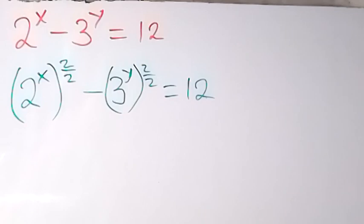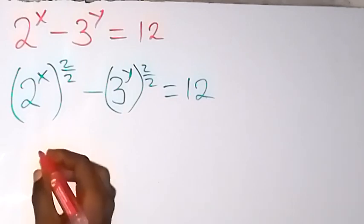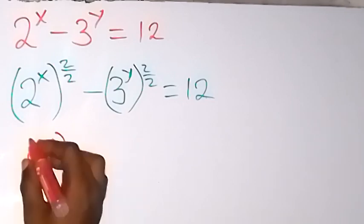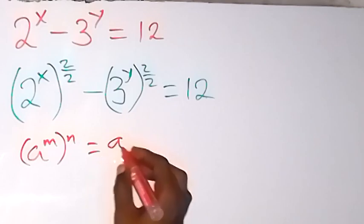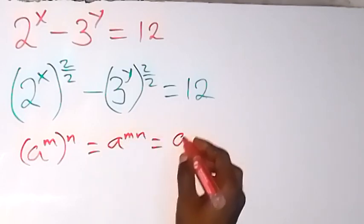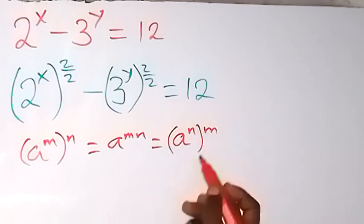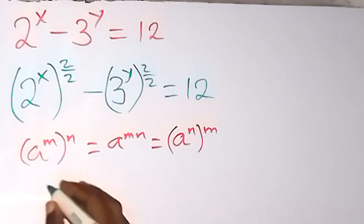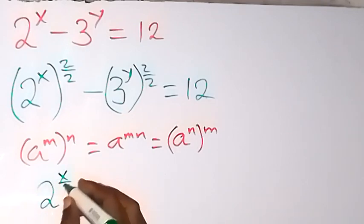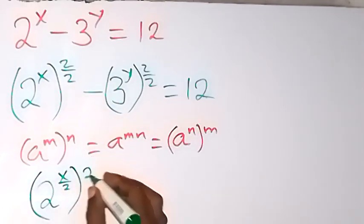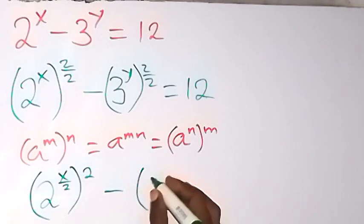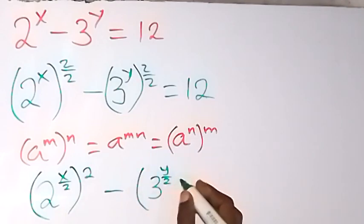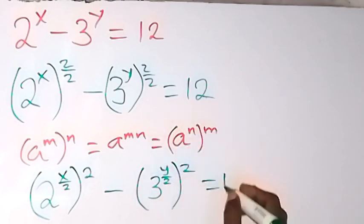Let's apply the law of indices here. When we have a raised to power m, then raised to power n, this can be written as a raised to power mn. We can interchange the powers because they multiply each other. So we can bring one of the powers inside and leave one outside, writing this as 2 raised to power x over 2, and the same for 3 raised to power y over 2, leaving the other power outside, equal to 12.